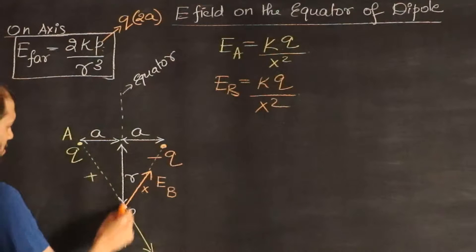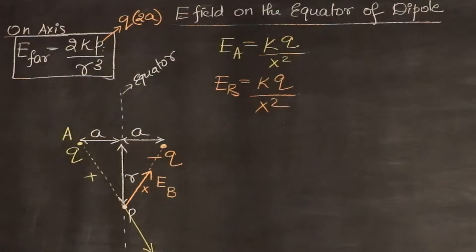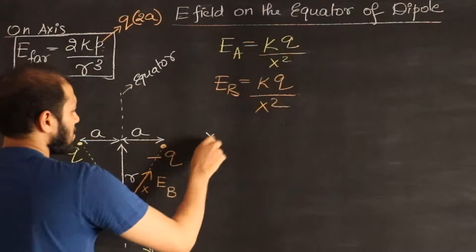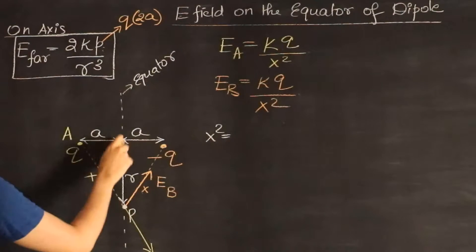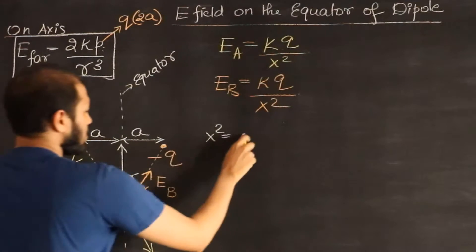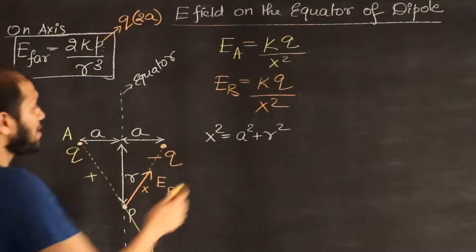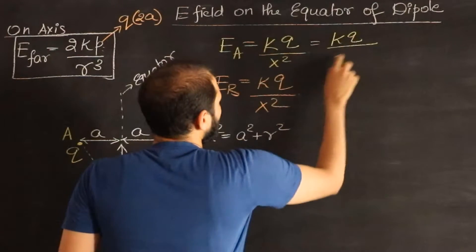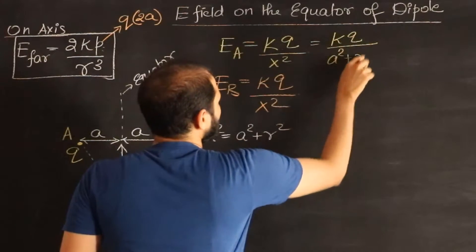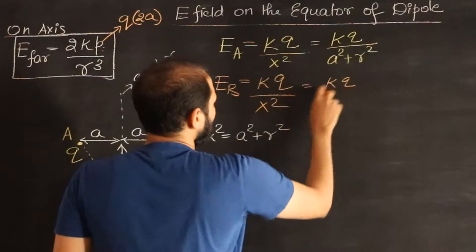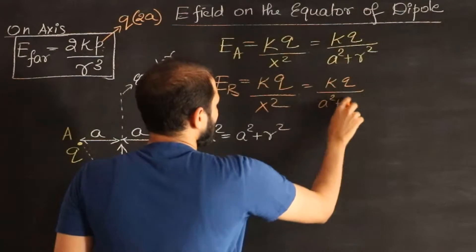Let's quickly understand what X is. You can use this triangle and Pythagorean theorem. Pythagoras theorem tells us X squared, the hypotenuse, should be equal to A square plus R square. Therefore we can go ahead and write this as KQ divided by A square plus R square, and this is KQ divided by A square plus R square.